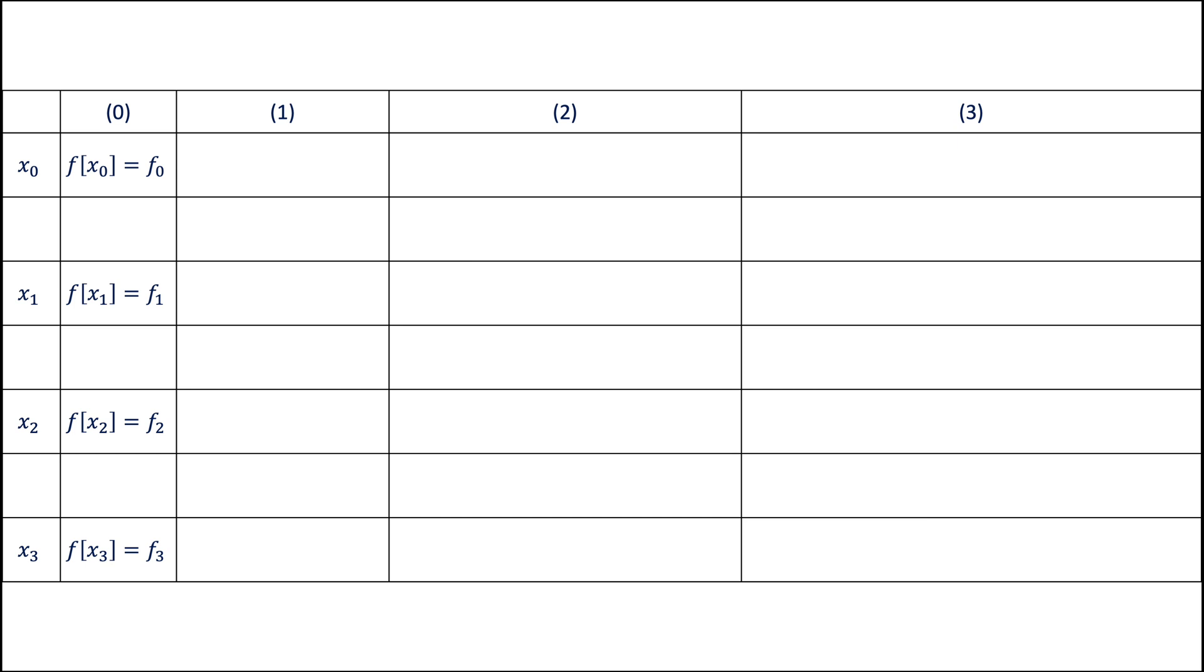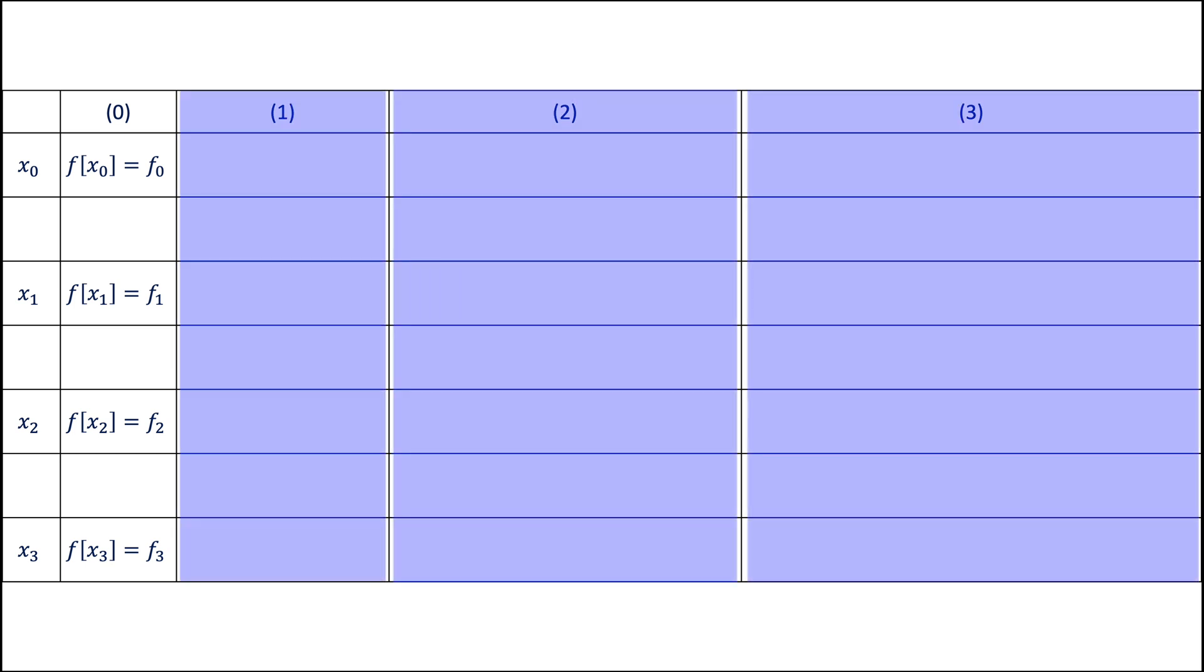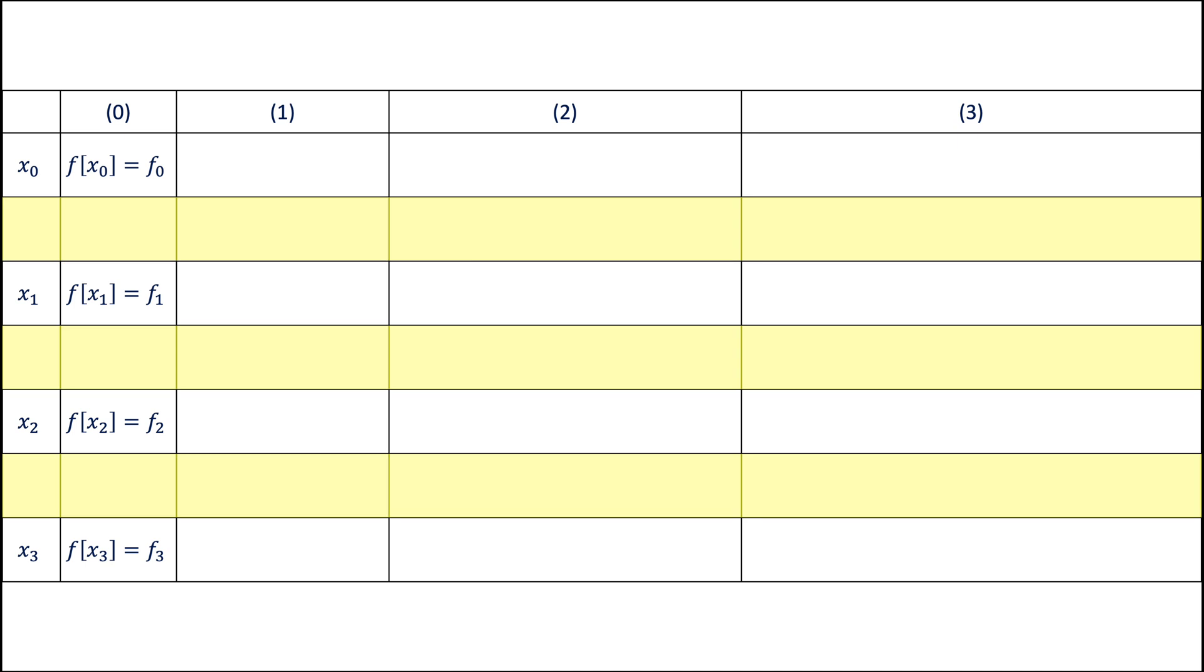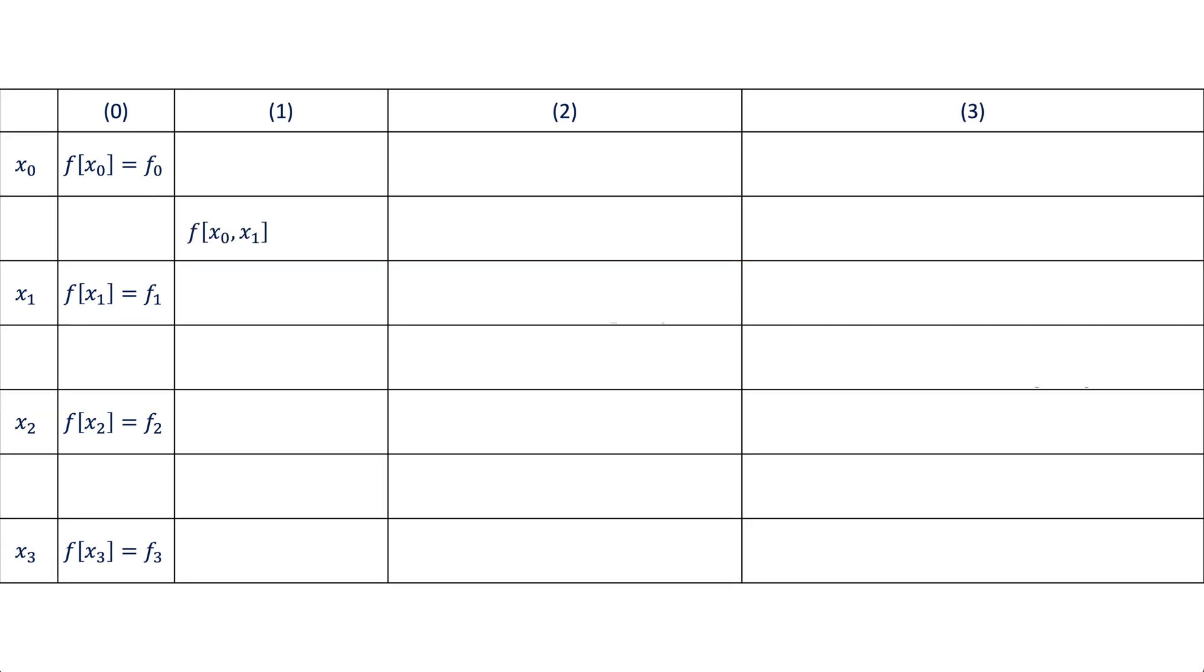The divided differences are going to be calculated column by column starting from column number one. The empty rows are added here to help us calculate the differences more easily. We start with the first difference in column one. As you see, the square brackets of f contain x zero and x one. In the same way, we get the next differences between f one and f two and between f two and f three.